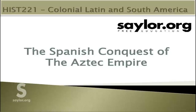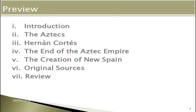Today's video is an overview of the Spanish conquest of the Aztec Empire, which took place in the first half of the 16th century. We'll start with a brief introduction to the Aztec Civilization, then cover the Spanish arrival and the conquest of the Yucatan Peninsula, followed by a study of the role of Conquistador Hernan Cortes. Then we'll cover the events that led up to the fall of the Aztec Empire and the creation of New Spain.